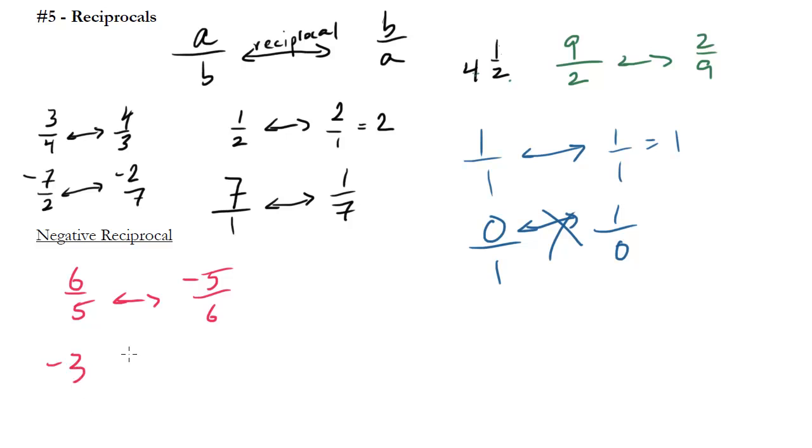So if we had say negative 3, the reciprocal of that would be 1 third. Because we flip and negate. If we had 7, the reciprocal would be negative 1 seventh.